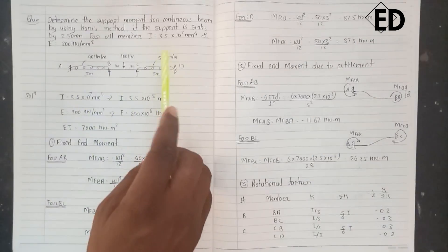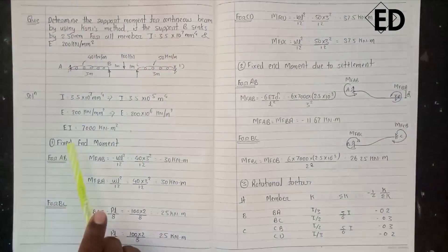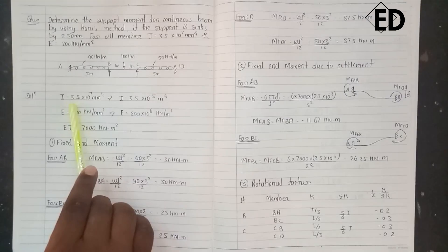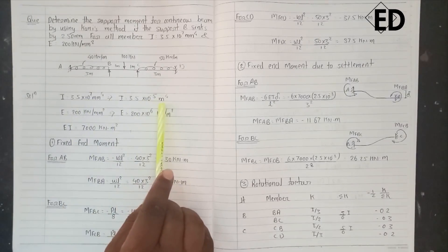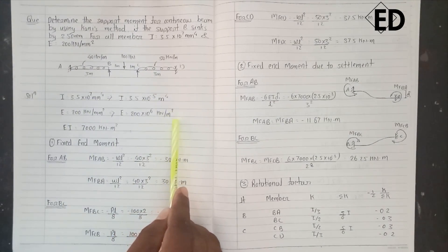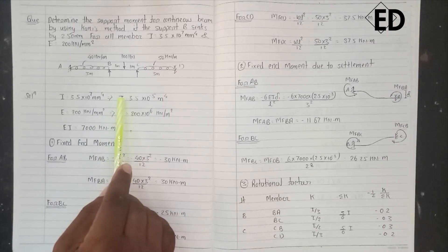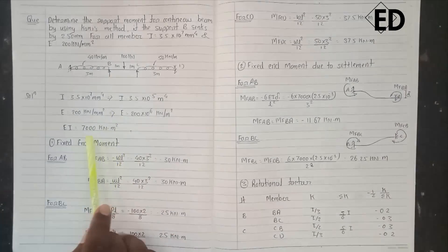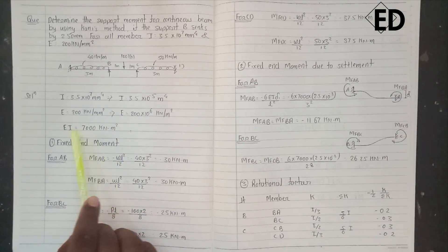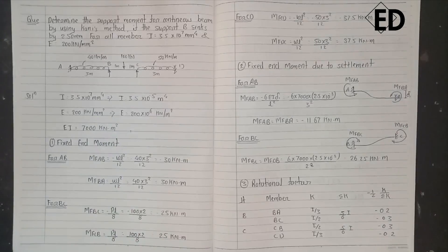First of all we have two values for I and E. Let's convert them into the proper units, that is m⁴ and kN·m². By multiplying these two we get EI equals 700 kN·m².